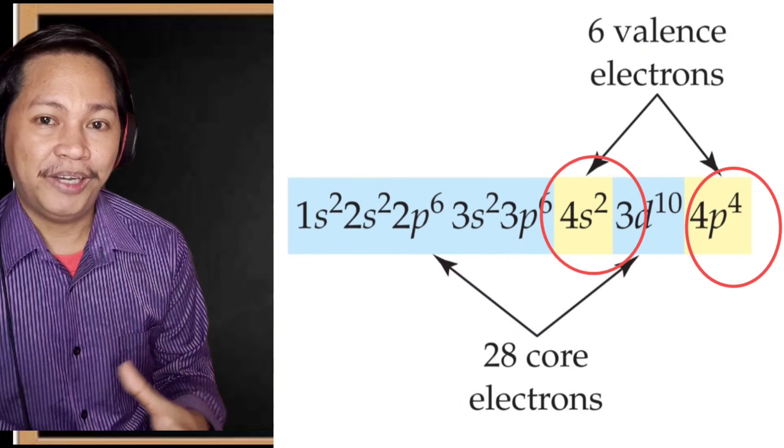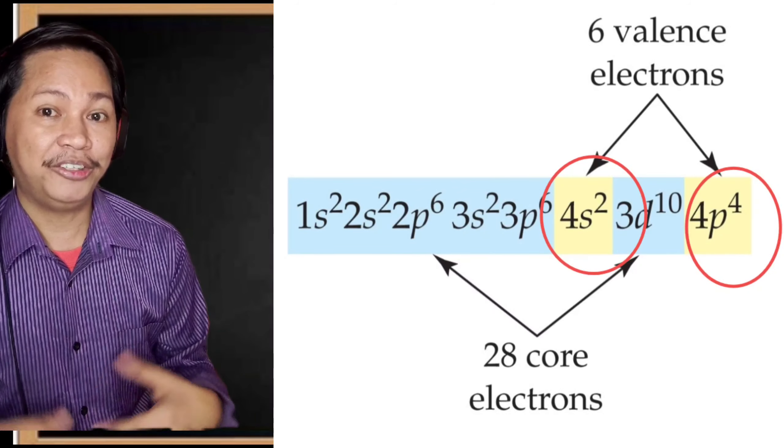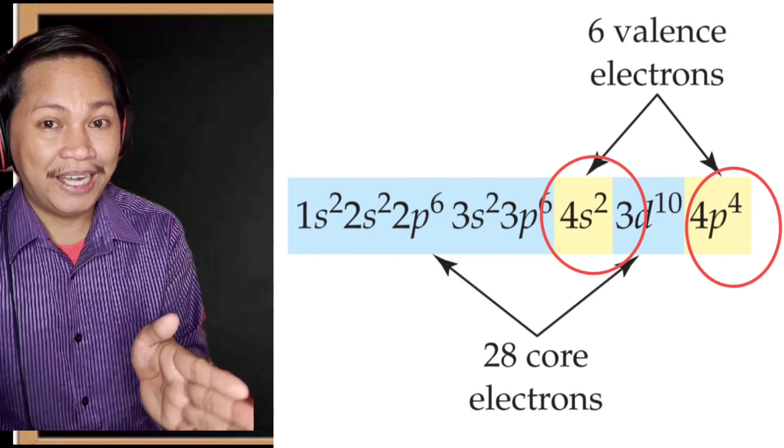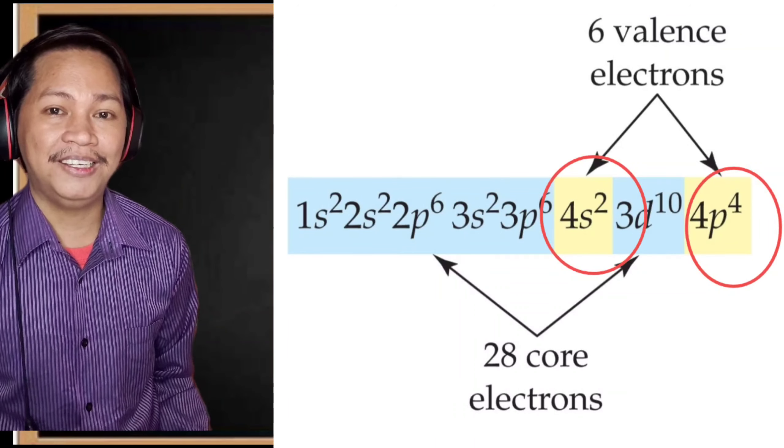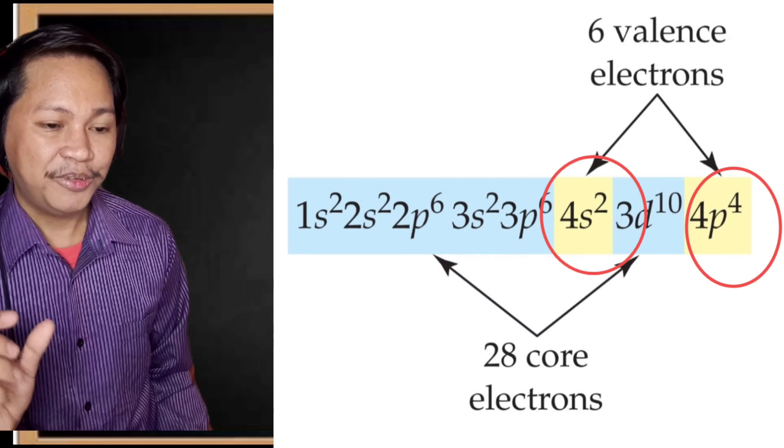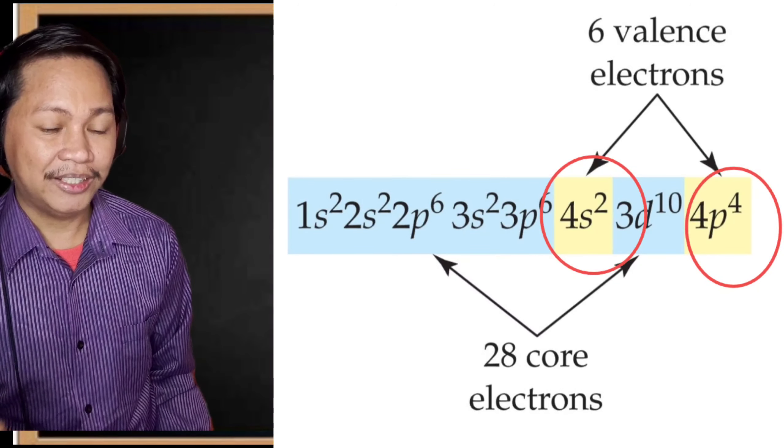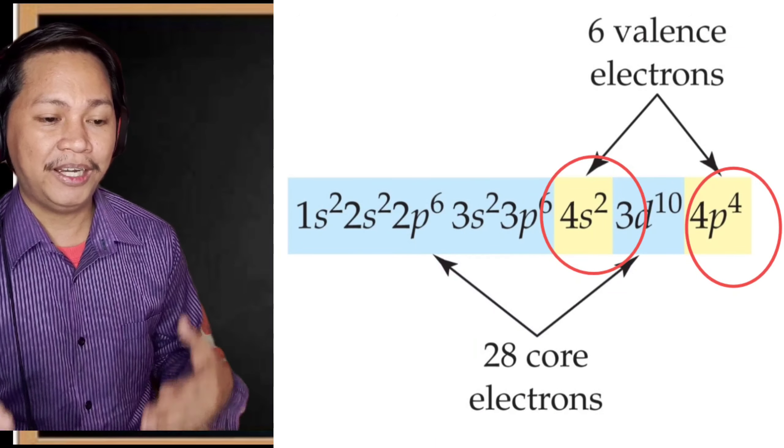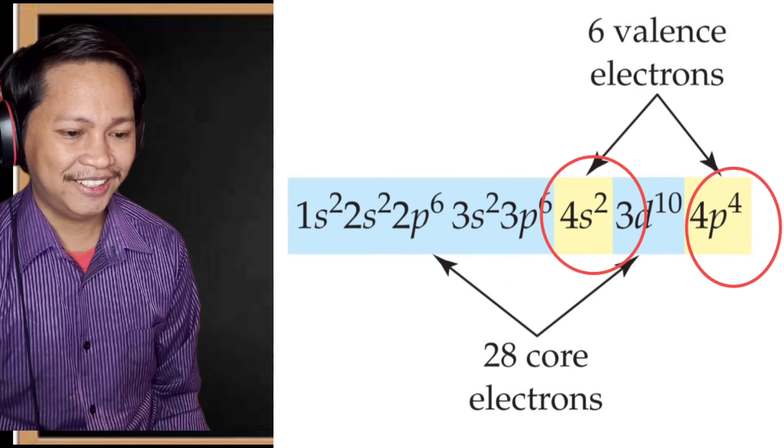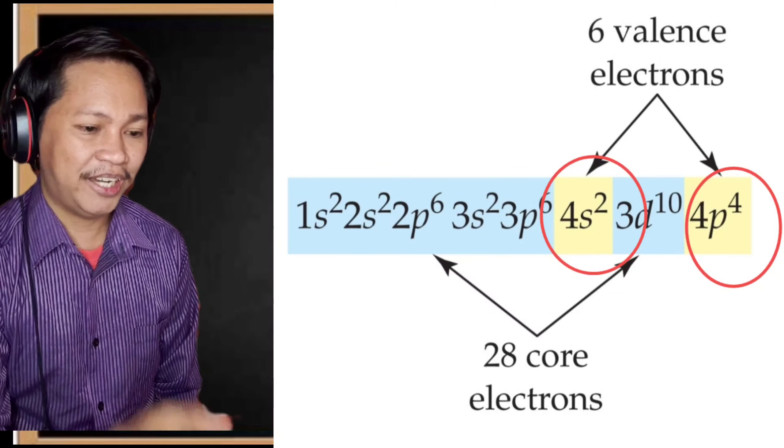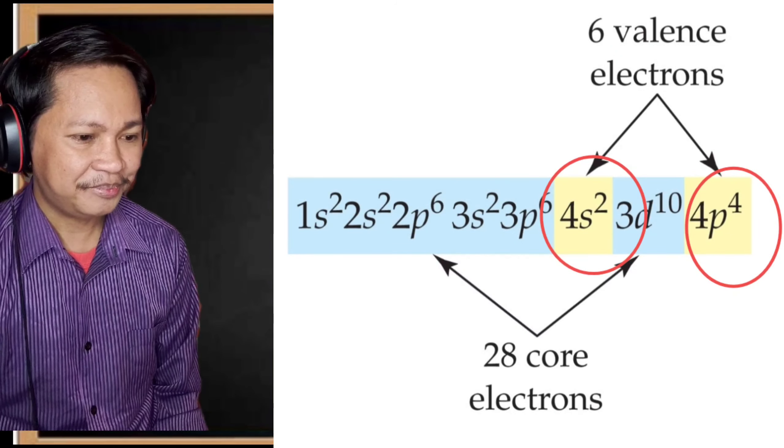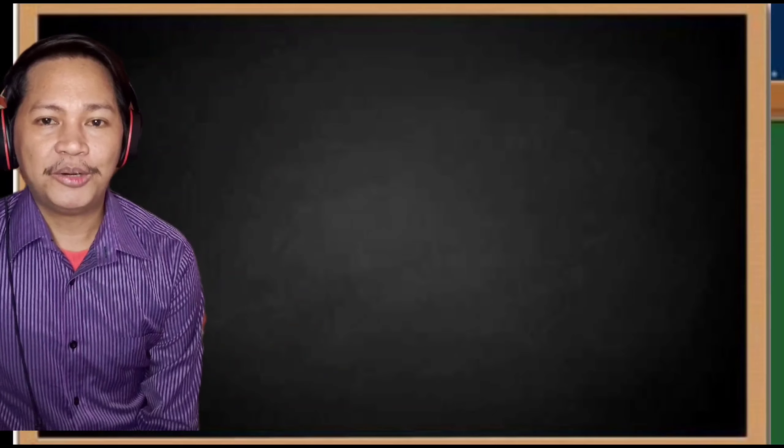Again, we look at the highest number and then add the electrons. The electrons occupying the highest shell or the outermost shell—only consider the outermost shell. Combine them to get the valence electrons. In this particular example, we have 6 valence electrons because we have 4s2 and 4p4. We add 2 plus 4, then we come up with 6. For the core electrons, add all of them together, so we have 28 core electrons.